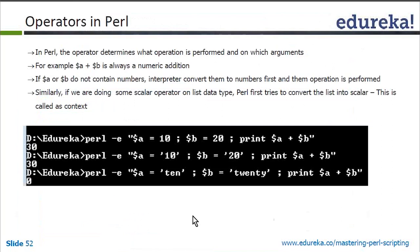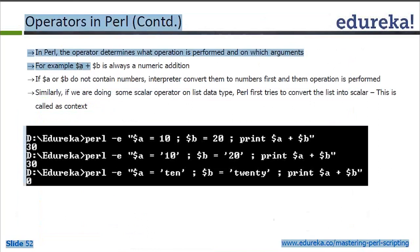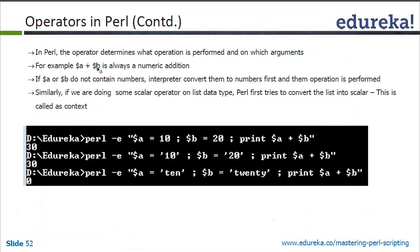In Perl, the operator determines what operation is performed and on which arguments. For example, '$A + $B' is always a numeric addition. If $A or $B do not contain numbers, the interpreter converts them to numbers first and then performs the operation. Similarly, if a scalar operation is done on a list data type (hash or array), Perl first tries to convert the list into scalar — this is called context.